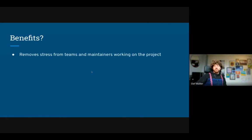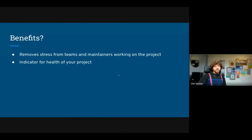So what are the benefits of using error budgets this way? You remove stress from teams and maintainers because you don't have to second-guess yourself: is the project stable enough? Do I need to spend time on code review, triaging issues, or fixing CI? You can actually focus, which reduces stress. It's also an indicator of health for your project — you can communicate it to your contributors and users, which increases trust. People like working in a place that's predictable.